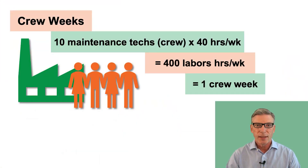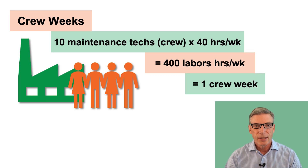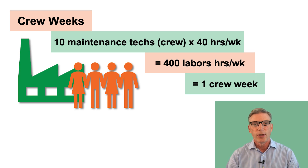What's the principle of backlog management? Well, it's about managing your long-term resources and making sure that work is completed in a timely manner. Let's take an example: you have 10 technicians in an area, they work a 40-hour week. That equals 400 hours, and that is one crew week.